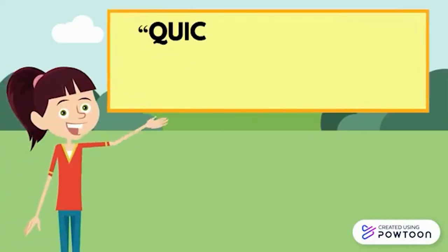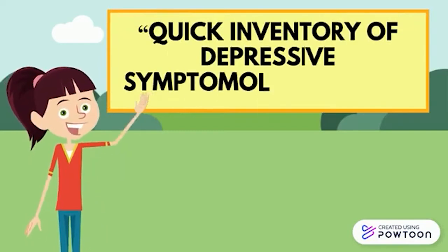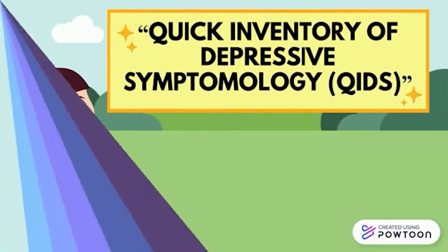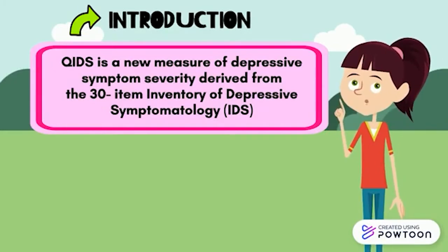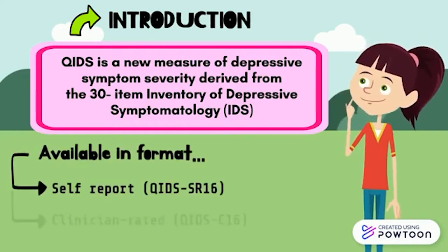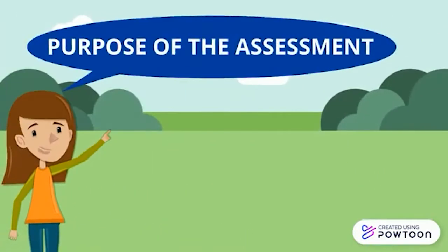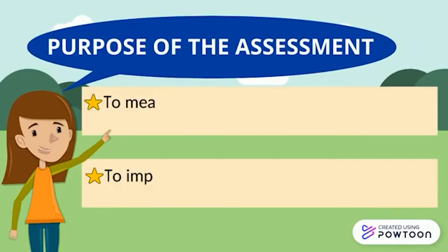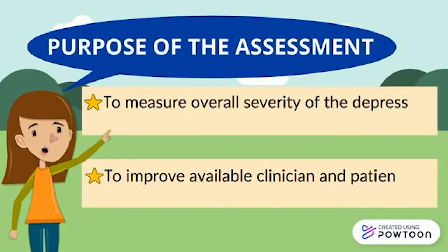Hello everyone, today I will talk about the Quick Inventory of Depressive Symptomatology, or QIDS for short. QIDS is a new measure of depressive symptom severity derived from the 30-item Inventory of Depressive Symptomatology. This assessment is available in self-report and clinician-rated formats. The purpose of QIDS is to measure overall severity of the depressive syndrome and improve available clinician and patient ratings.